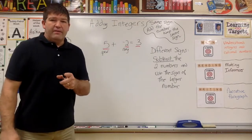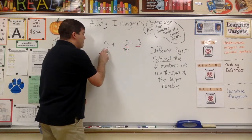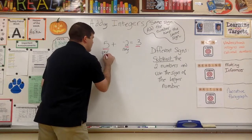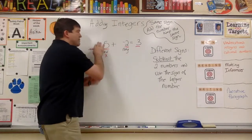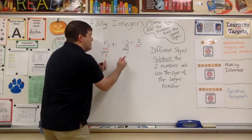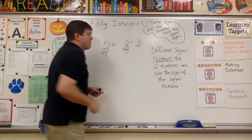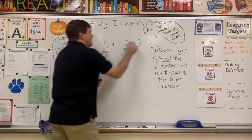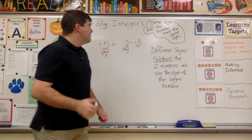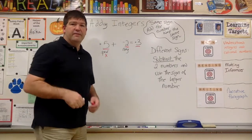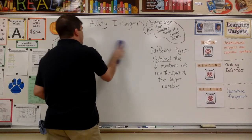Now the second step: I go back and look at which sign belongs to the bigger digit. I have five and two — five is bigger than two. I'm not worried about negative or positive, just the digit. The digit five is bigger than two, so I keep the positive sign. So five plus negative two is a positive three.